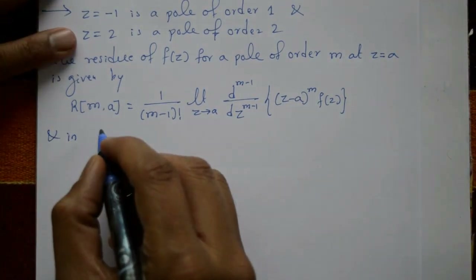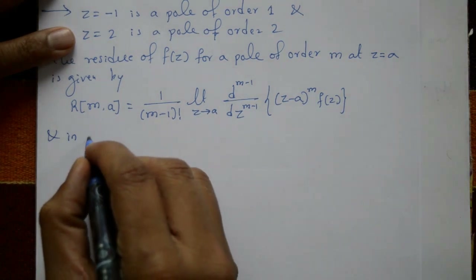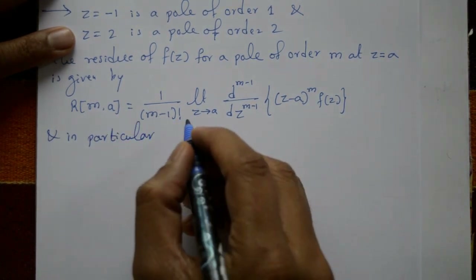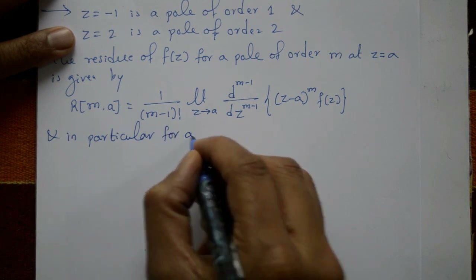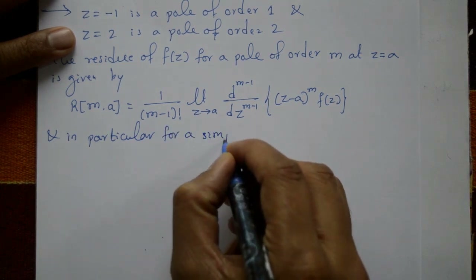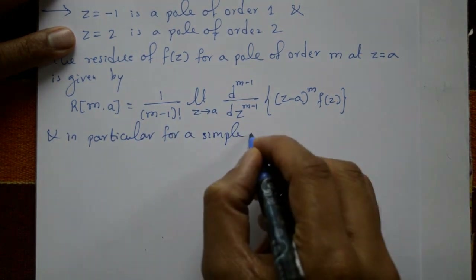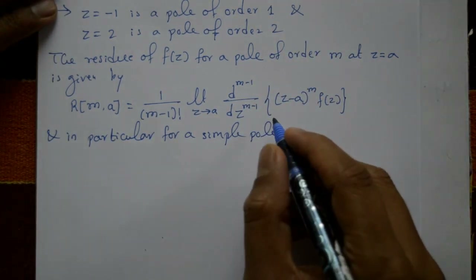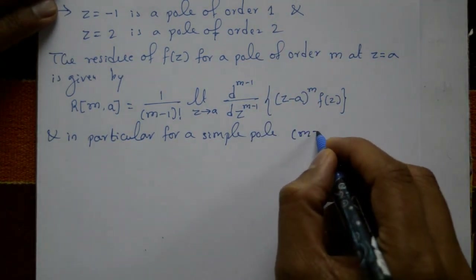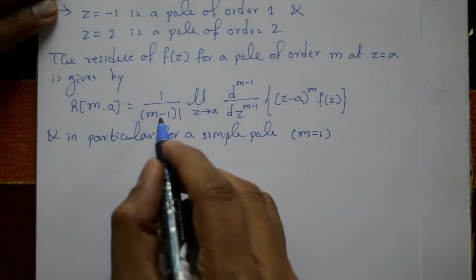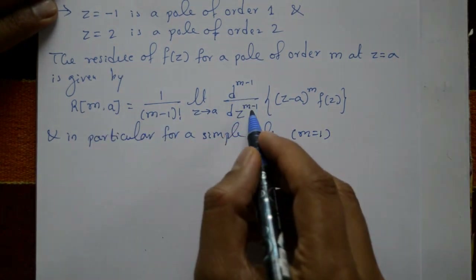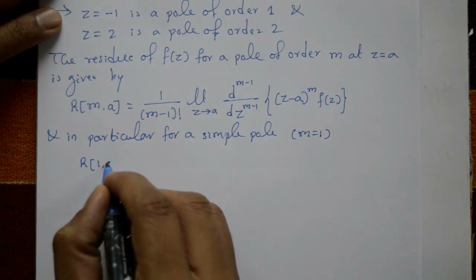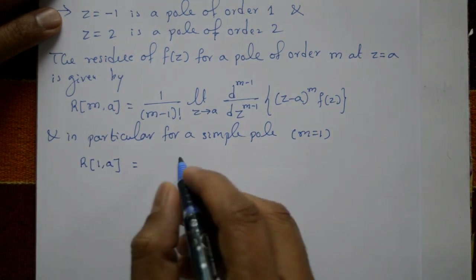In particular, for a simple pole — a simple pole means the order is one, i.e., m = 1 — we use this particular form of the formula. Take m = 1, so this becomes R(1, a).